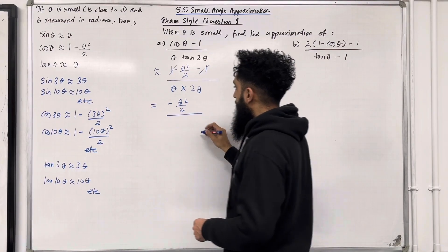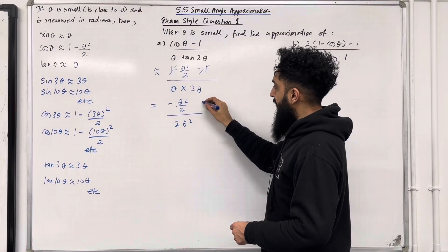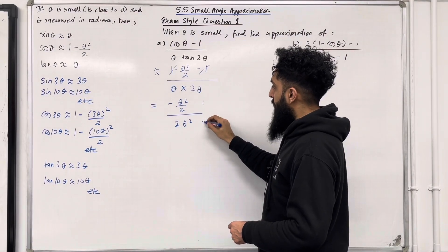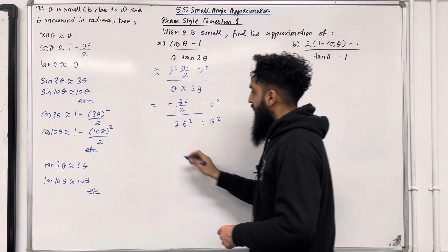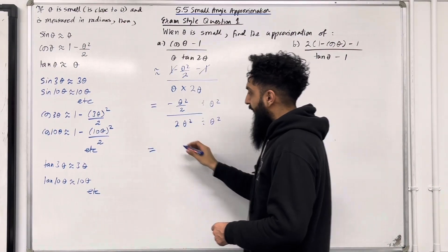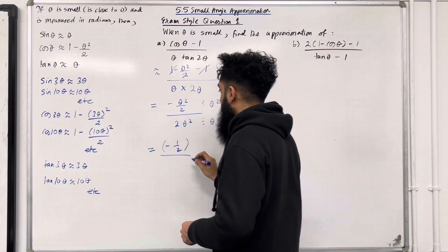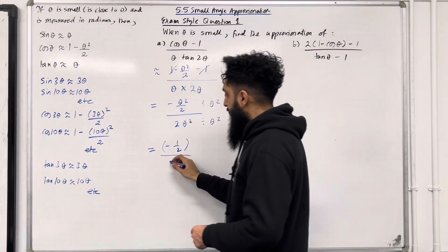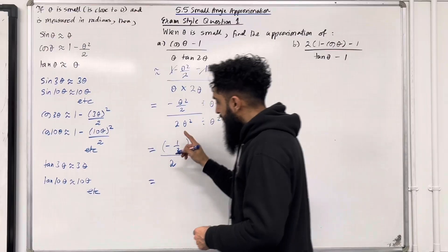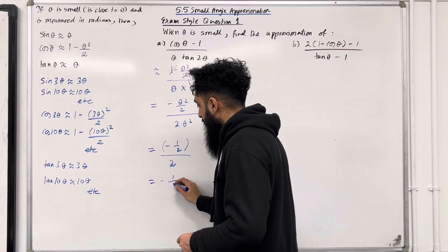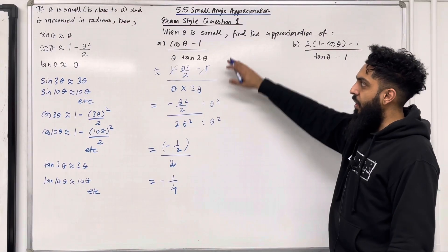We now have minus θ² over 2, all over 2θ². Dividing top and bottom by θ², the numerator becomes minus 1/2 and the denominator becomes 2. So minus 1/2 divided by 2 is minus 1/4. That is the approximation of this fraction.